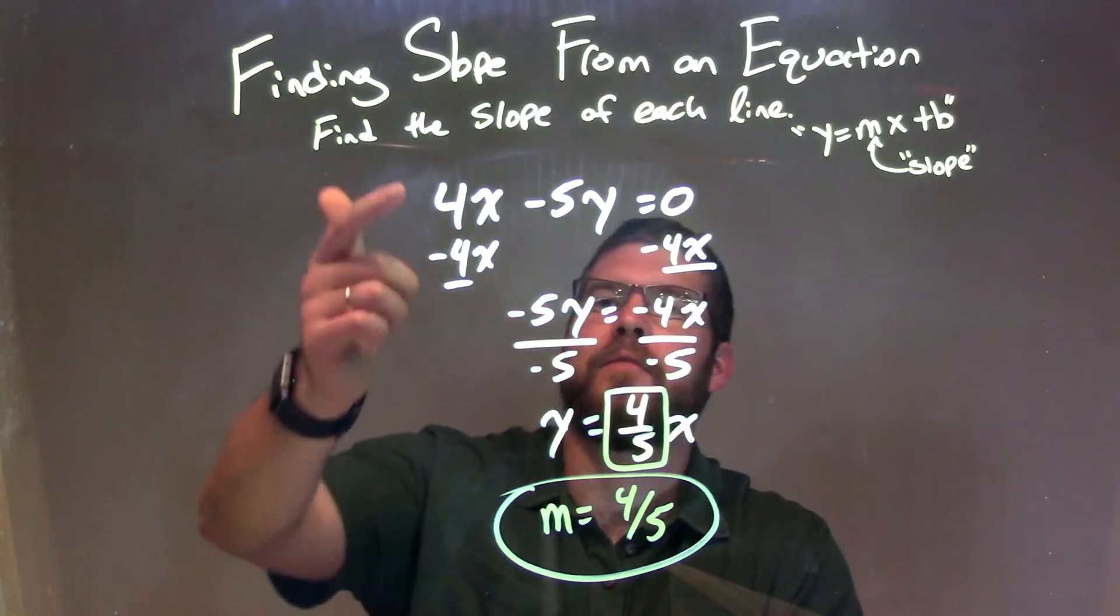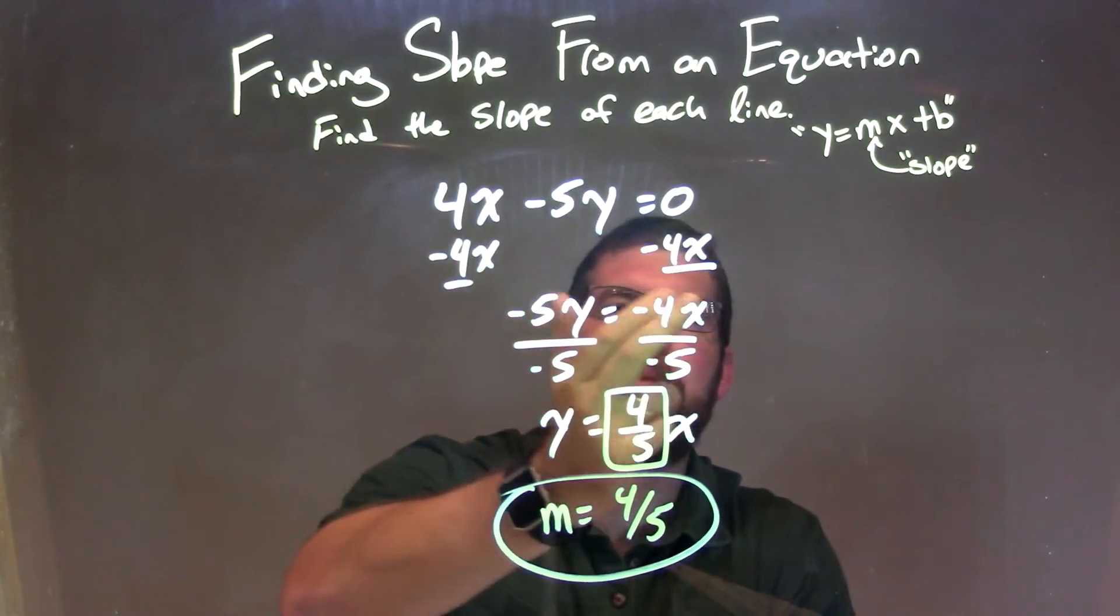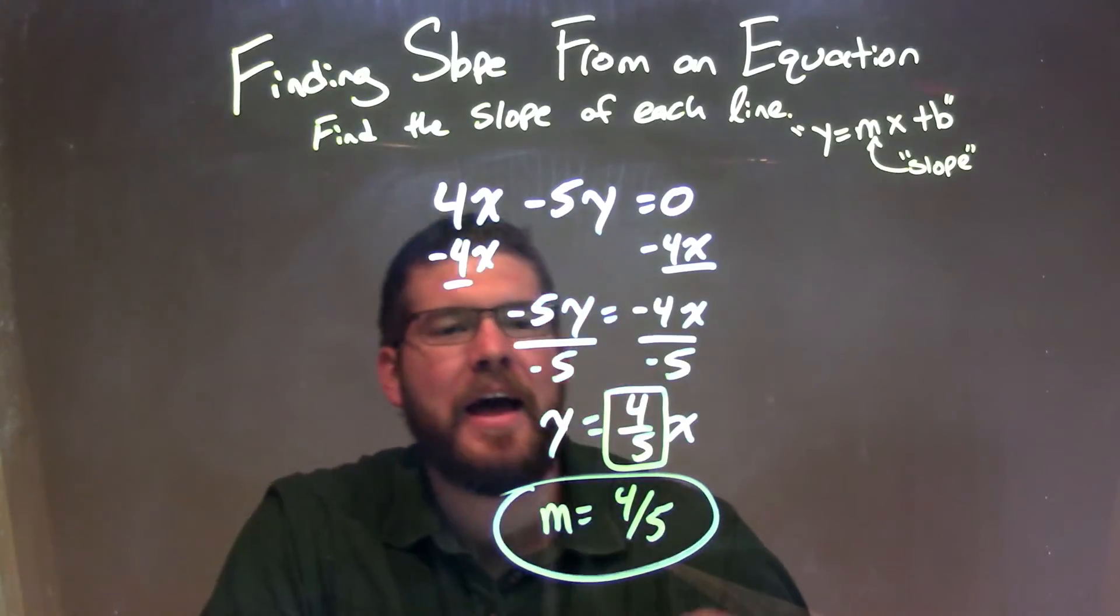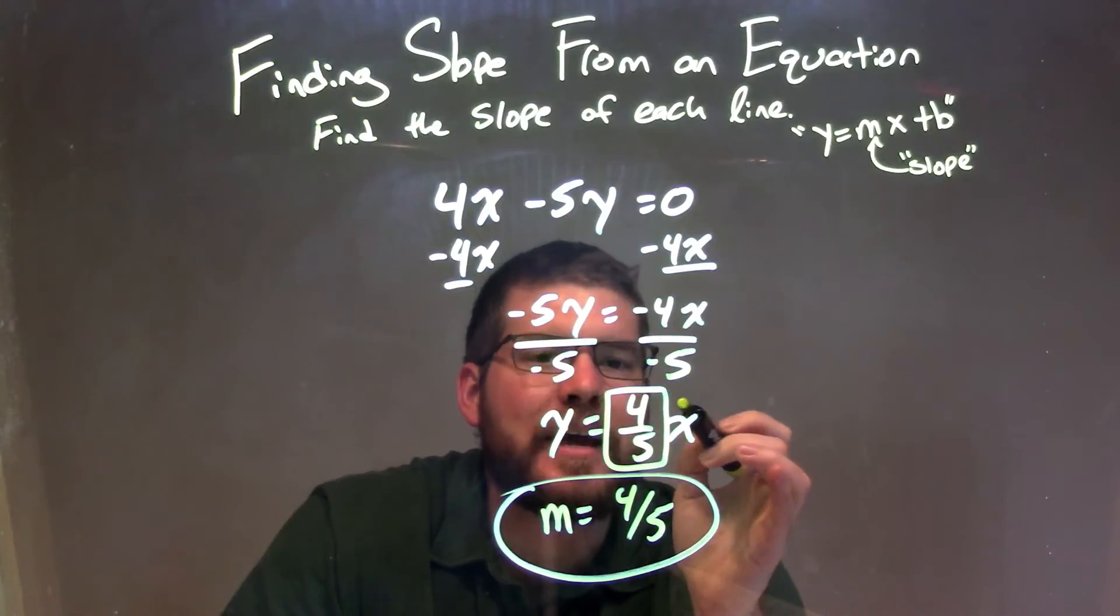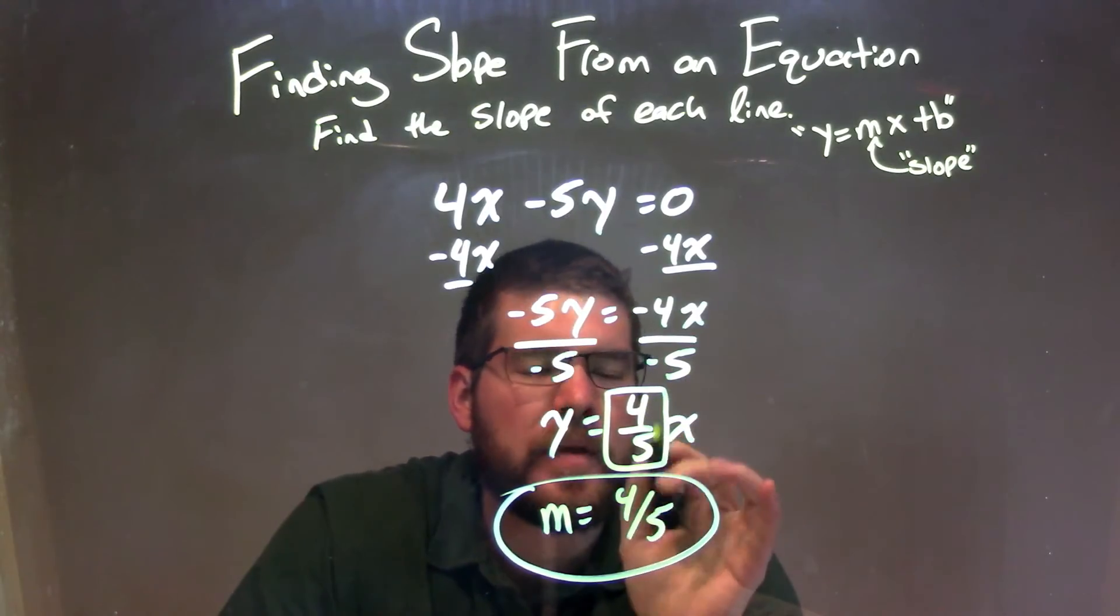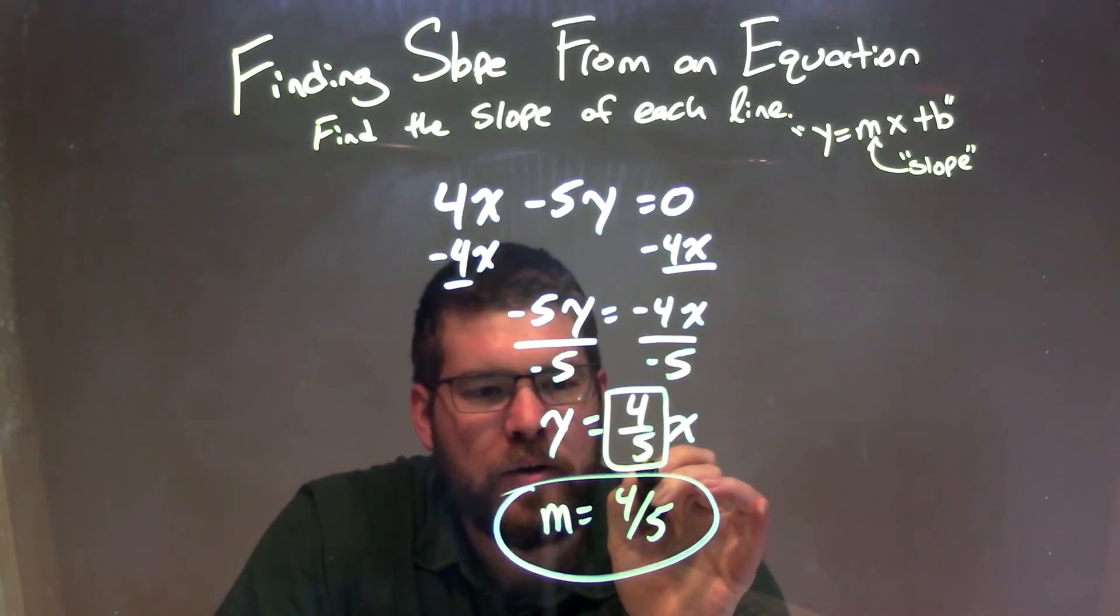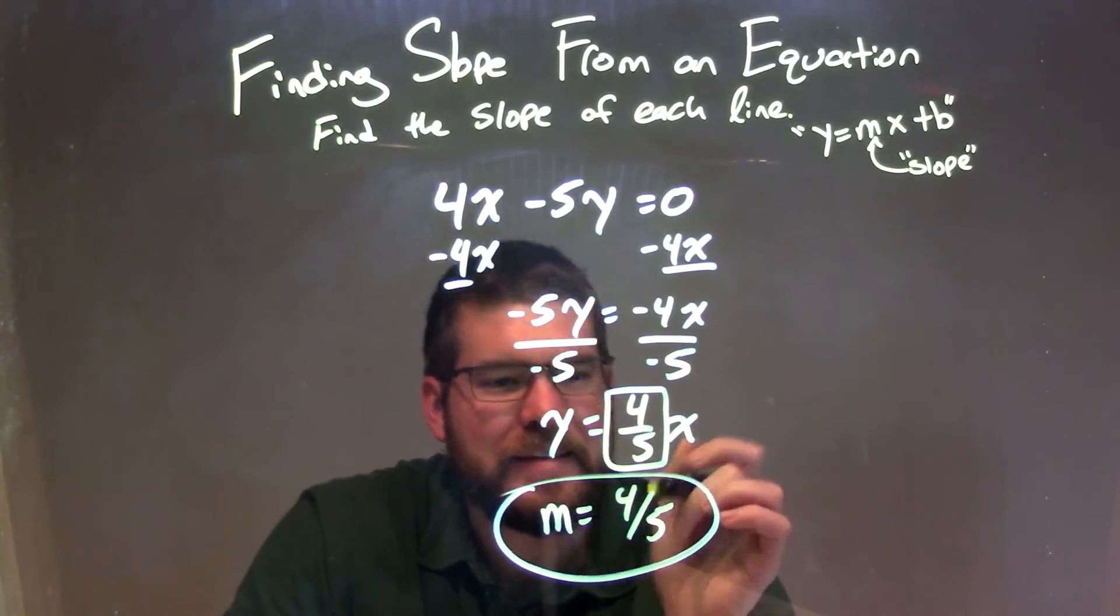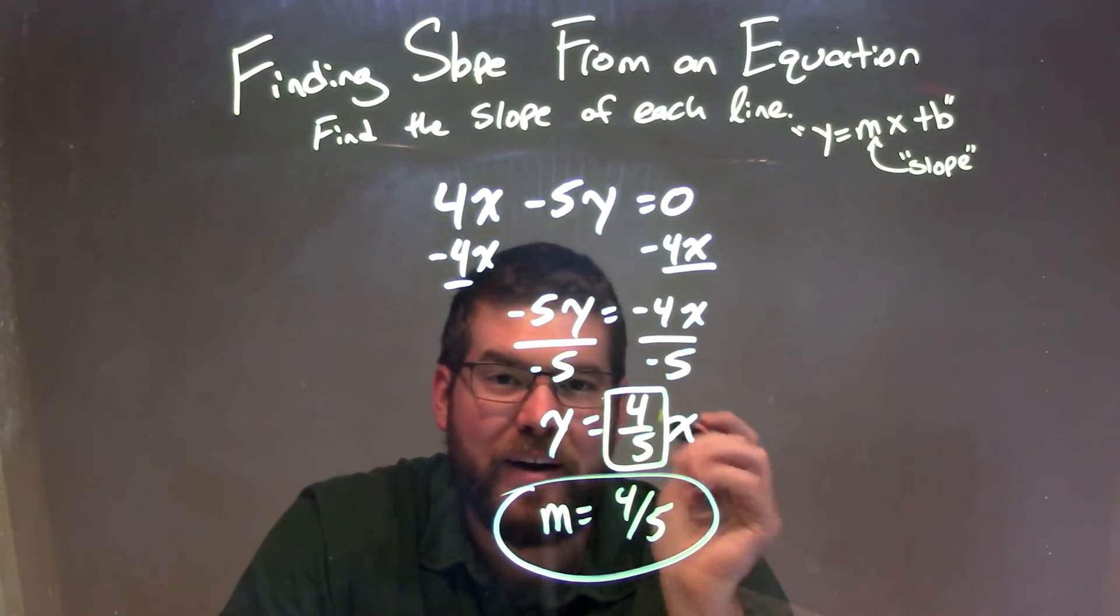So let's recap. We're given 4x minus 5y equals 0. To get y by itself, I first subtract 4x from both sides, then I divide by negative 5. That left me with y by itself, and negative 4x divided by negative 5 came out to a positive 4 fifths x. That 4 fifths was the coefficient in front of x, which is our m value, which is our slope. So our final answer is m equals 4 fifths.